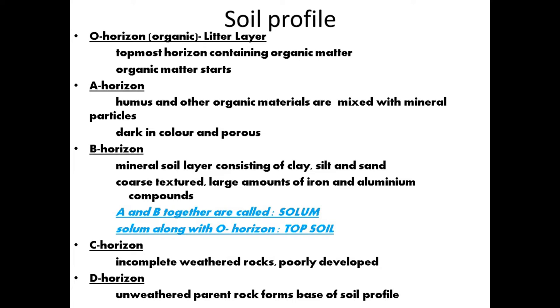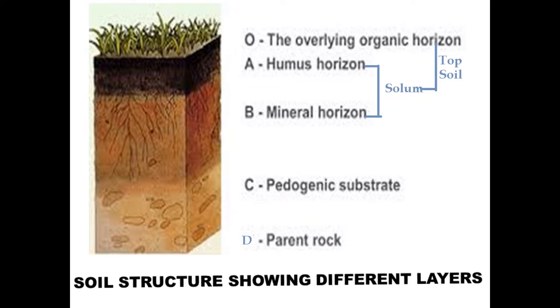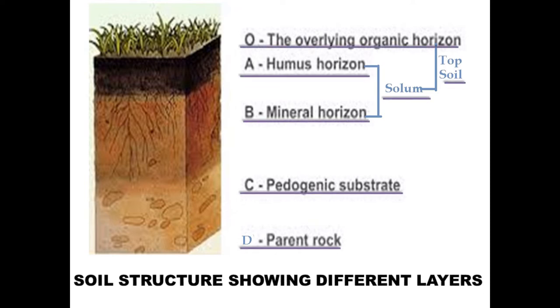The last D horizon consists of unweathered parent rock, forming the base of the soil profile. Soil formation is a very slow process — it takes 1000 years to form just 1 cm of soil. This slide shows a detailed diagrammatic view of the different layers of soil.